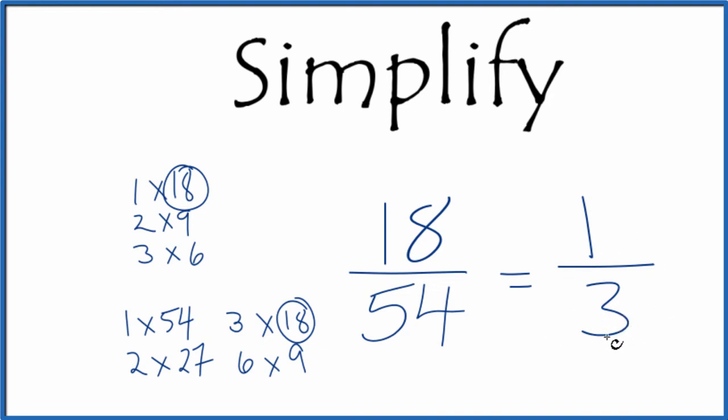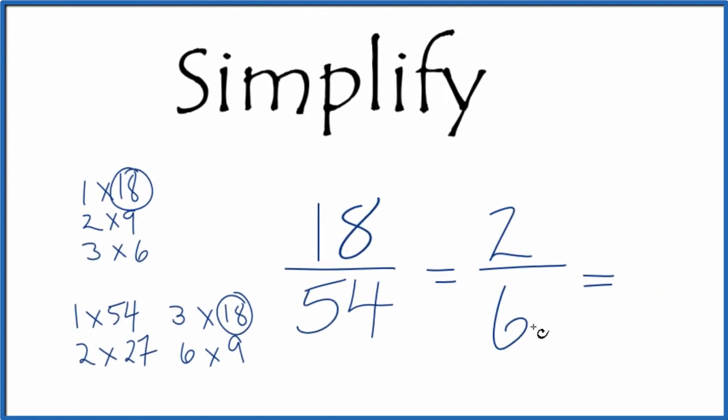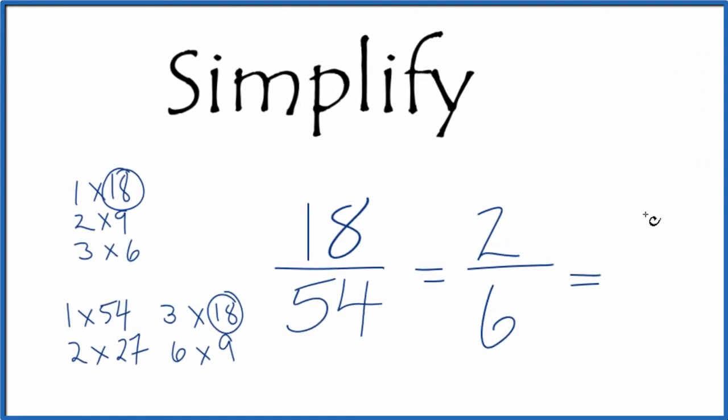There's another way you could do this if you didn't know that 18 went into both 18 and 54. If you knew 9 went into 18 twice, and then 9 went into 54 six times, you could reduce to 2/6, and then divide the numerator and denominator by 2. 2 divided by 2 is 1. 6 divided by 2 is 3.